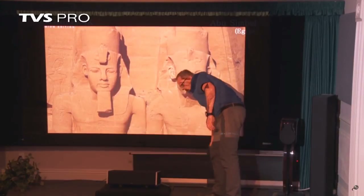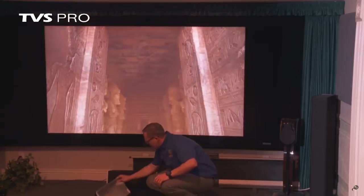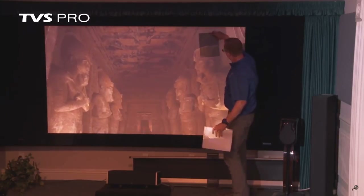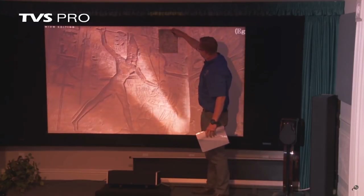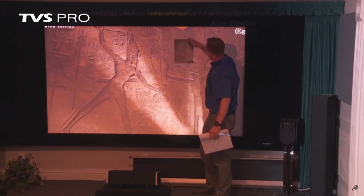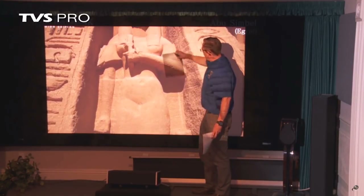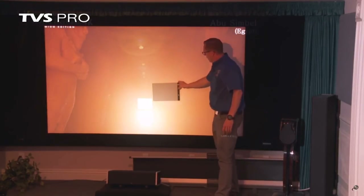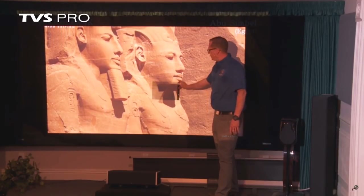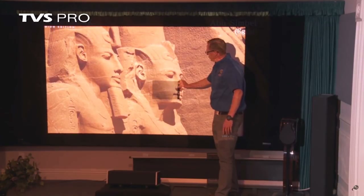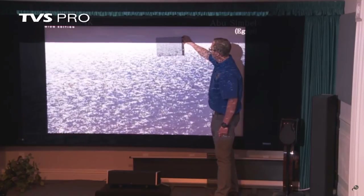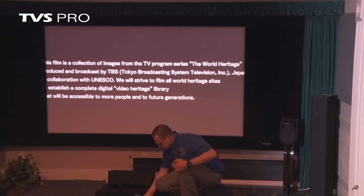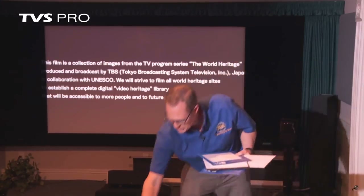Here's an example of a high ambient light rejecting material from Stewart — it really brings out black levels and provides more contrast. Here's another material that's not a high ambient light rejecting screen, but simply a high contrast material with a gain of about 1.2, which provides a little better contrast when there's some ambient light but not a ton.